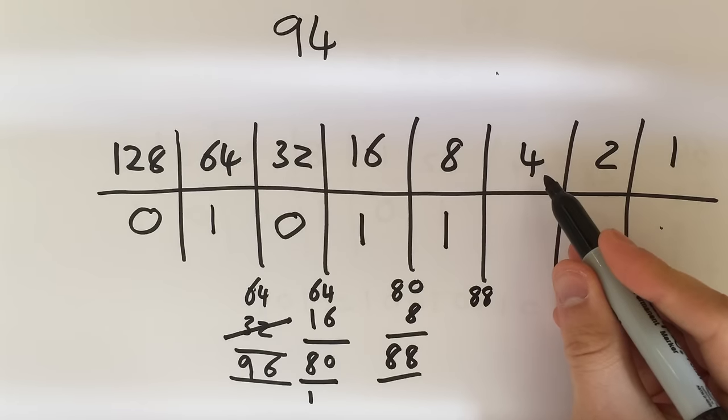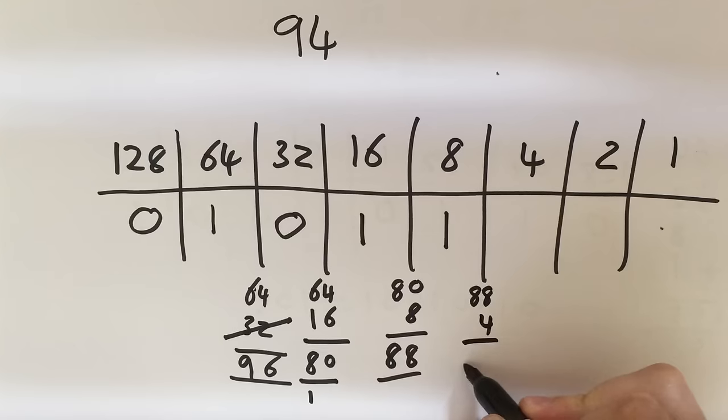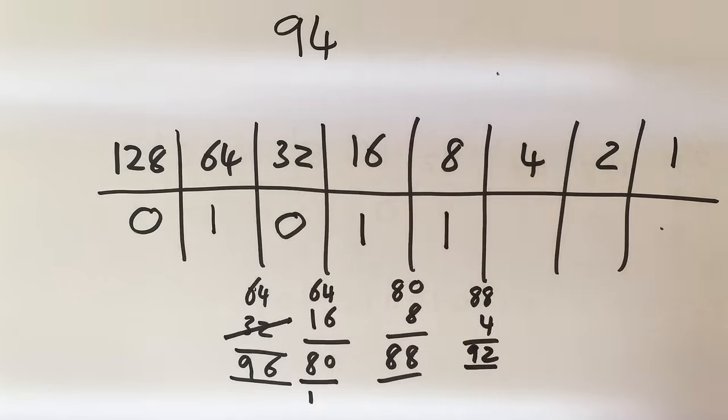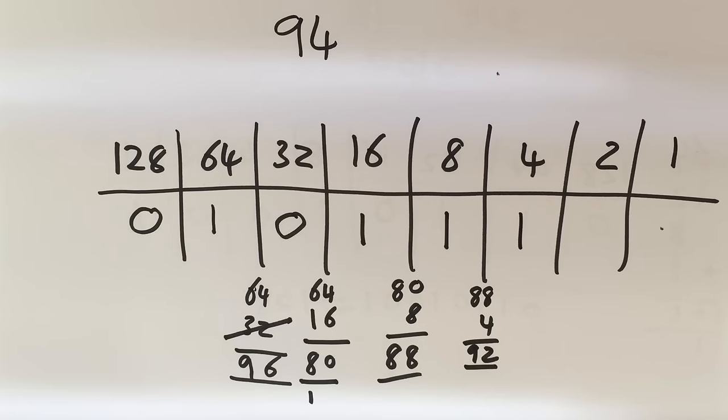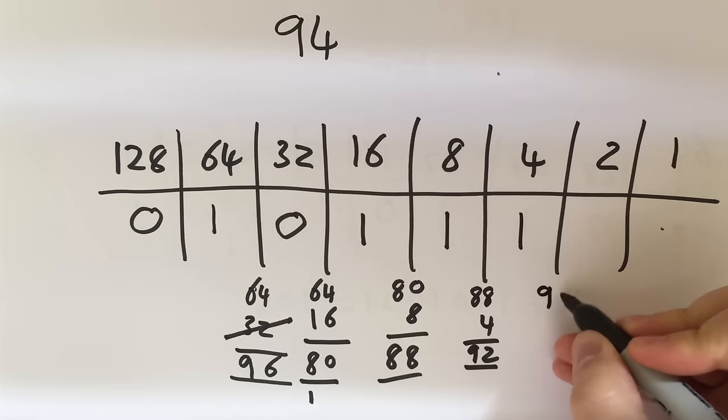Can I add 4 on to 88? Well 88 add 4, that's going to get me up to 92. That's fine because I need to go to 94. So 1, yes I do need that 4. I'm now up to 92.